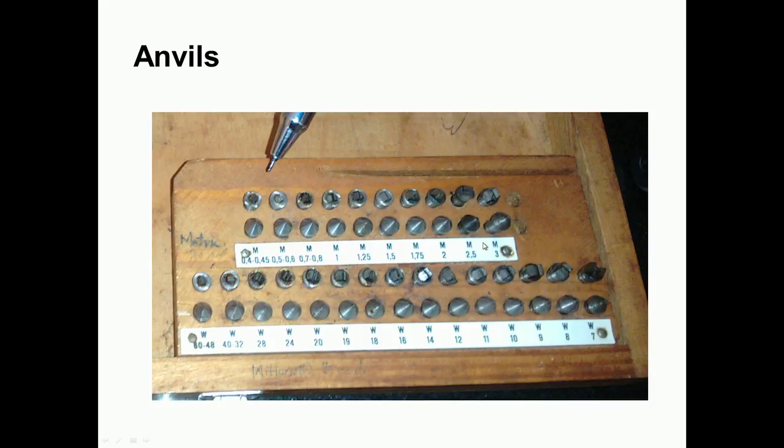With this, let us conclude this session. In this session, we discussed pitch measurement and effective diameter measurement. We studied different methods of measuring pitch — optical methods and use of screw pitch gauge — and then the measurement of effective diameter, discussing two wire method, three wire method, and use of screw thread micrometer for direct measurement of effective diameter. Thank you.